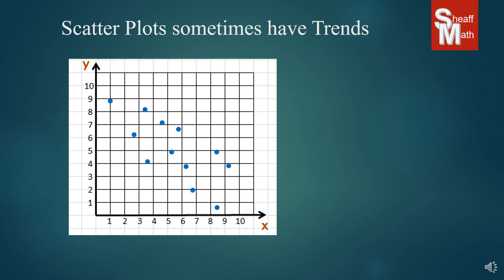Sometimes trends appear to be going downward. And so you can see from left to right, it is going in the downward trend. And so we call this a negative trend when it's going downward from left to right.